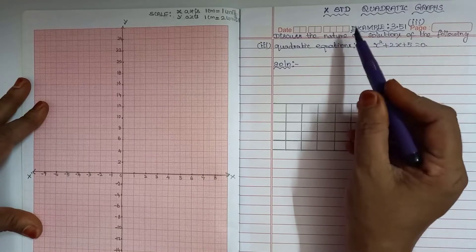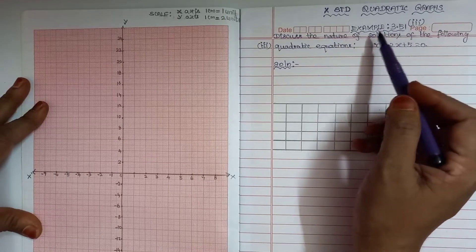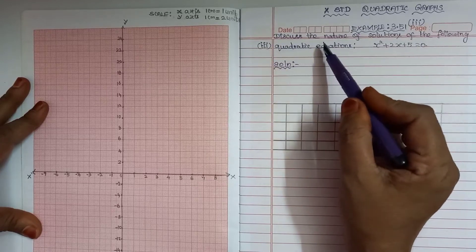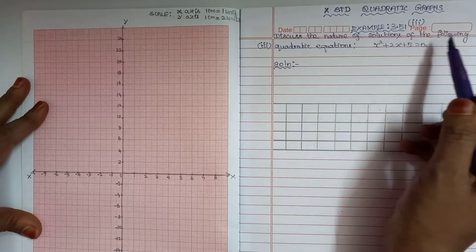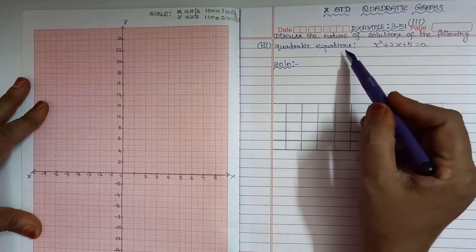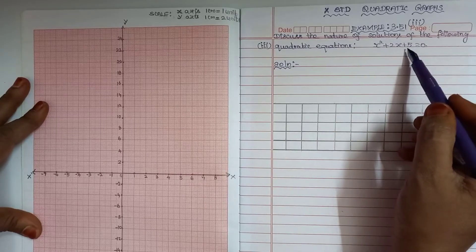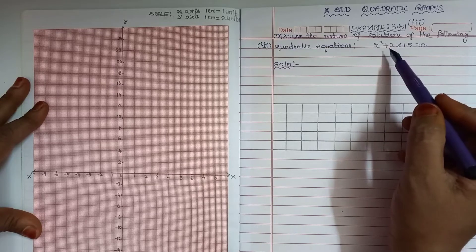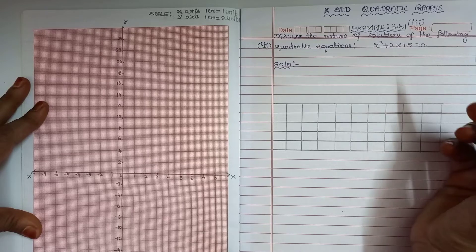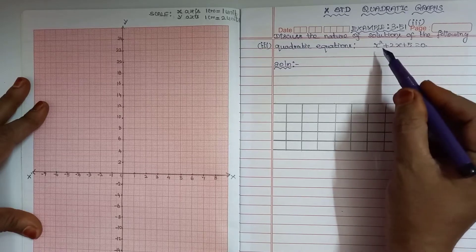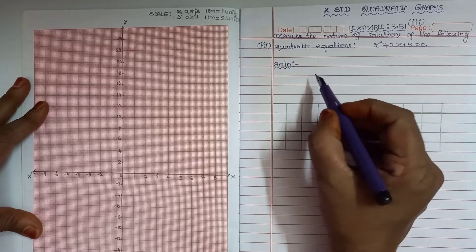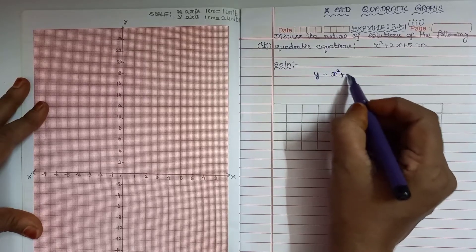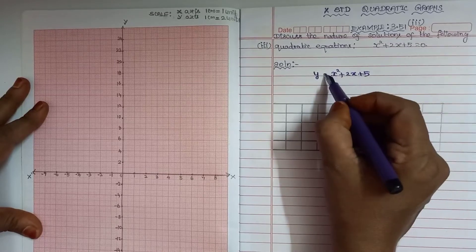Good morning everyone. This is example 3.51, subdivision 3 - we will discuss the nature of solutions of the following quadratic equation: x squared plus 2x plus 5 equals 0. For quadratic equations, we need to find out the nature of the solutions. Let us consider y equal to x squared plus 2x plus 5.